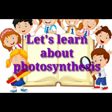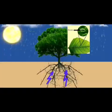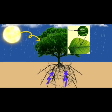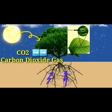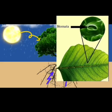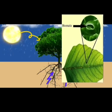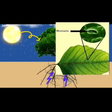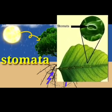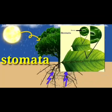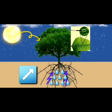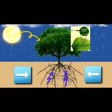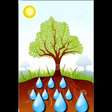The carbon dioxide from the air passes through small pores in the leaves — these pores are called stomata. Water is absorbed by the roots and passes through vessels in the stem on its way to the leaves.